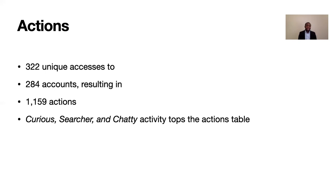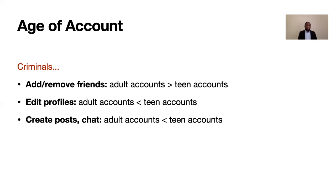Curious, searcher, and chatty activity dominated the actions table. Regarding age: when criminals connect to adult accounts, they do more adding and removing of friends than when they connect to teen accounts. On the other hand, when connecting to teen accounts, criminals do more profile editing, more chatting, and more post creation. This indicates differences along the age dimension — attacker behavior differs depending on the demographic attributes of the accounts they breach.